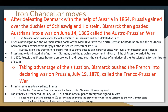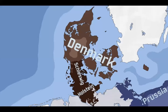Prussia now dominated all of northern Germany, and its growing military might worried France. In 1870 Prussia and France became embroiled in a dispute over the candidacy of a relative of the Prussian king for the throne of Spain. Bismarck pushed the French into declaring war on Prussia on July 19th, 1870 — the Franco-Prussian War. Prussian armies advanced into France; on September 2nd the entire French army, including French ruler Napoleon III, was captured. Paris finally surrendered January 28th, 1871. An official peace treaty signed in May required France to pay five billion francs and give up the provinces of Alsace and Lorraine to the new German state. The loss of those territories left the French burning for revenge.